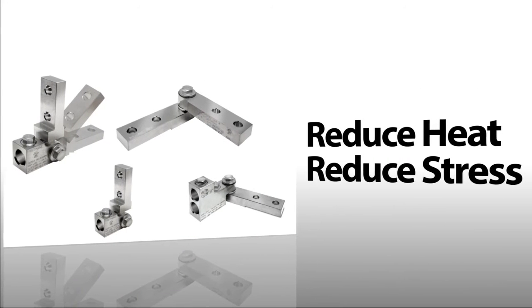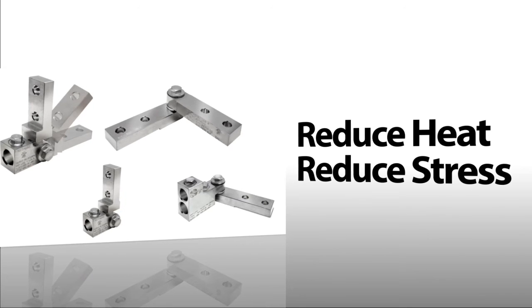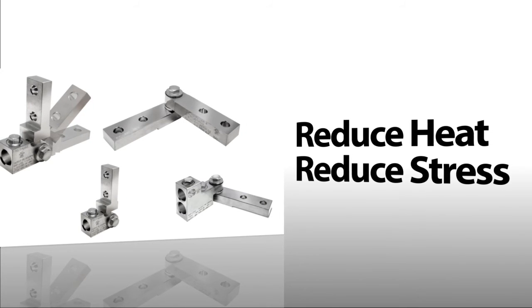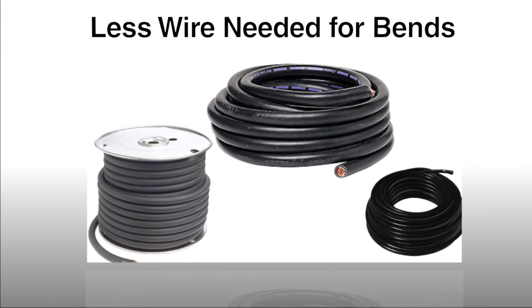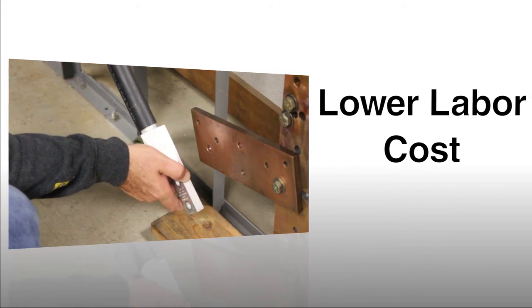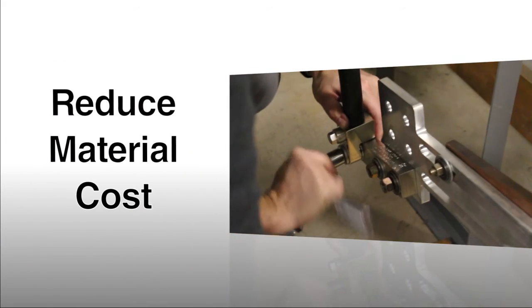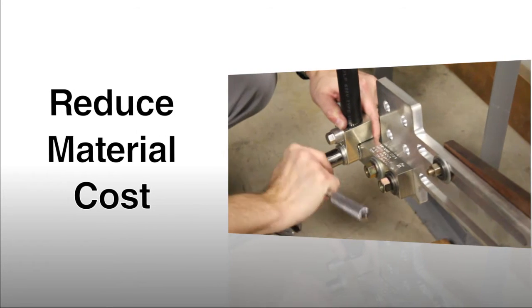No longer will wire be bent beyond allowable radius code set by UL, reducing heating and stress issues associated with improper installations. Less wire is needed for bends, lowering installed cost by reducing the labor required in bending the wire and the material cost associated with the amount of wire needed for the job.